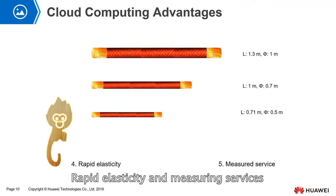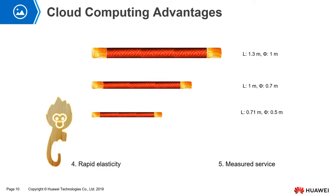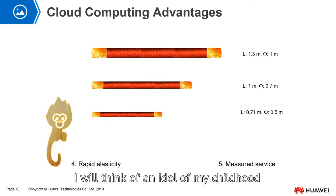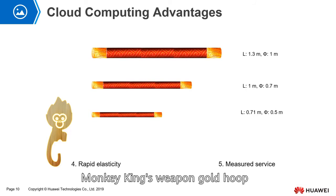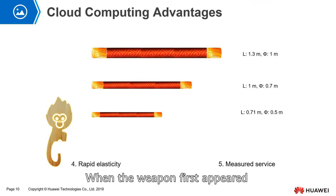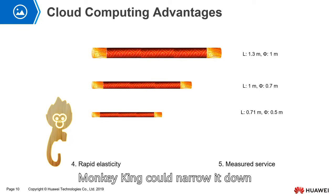The next two features are rapid elasticity and measured service. Regarding rapid elasticity, I think of the idol of my childhood — the Monkey King. The Monkey King's weapon, the golden hoop, can be optionally big or small. When the weapon first appeared, it was like a pillar. Later, the Monkey King could narrow it down and put it into his ear.